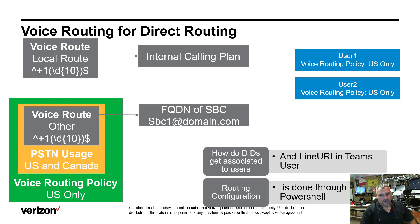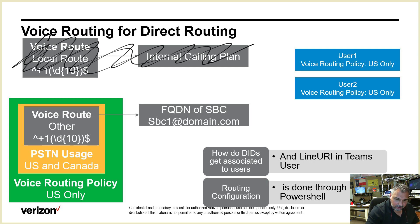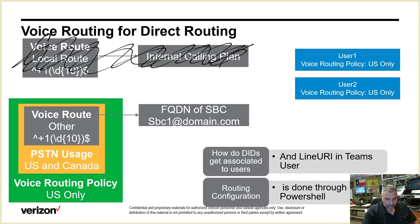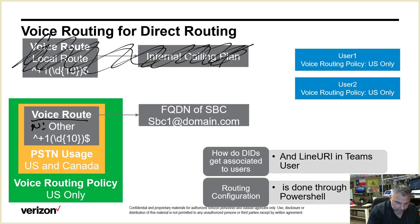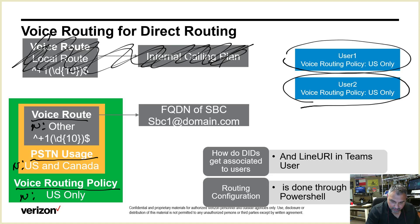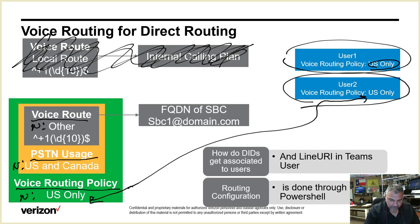For Cisco guys, I'll back you into how Microsoft's voice routing works. First, you create a voice route and give it a name. Then you create a PSTN usage — for example, named 'US and Canada.' Then you create a voice routing policy — for example, named 'US Only.' Then you go to your users and give them that routing policy 'US Only.' If you pause this video and look, it's pretty straightforward.